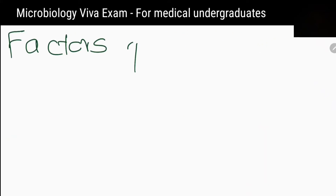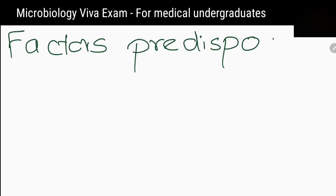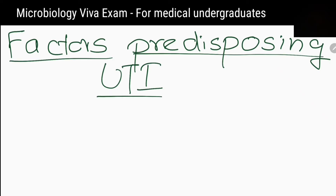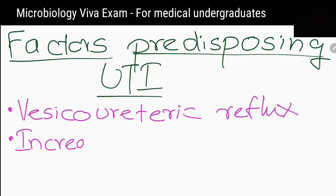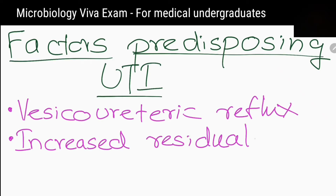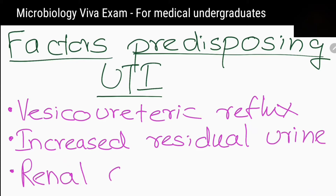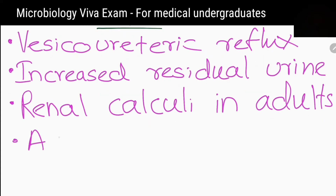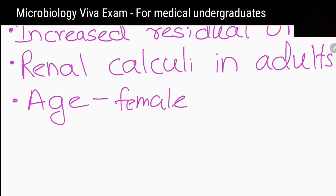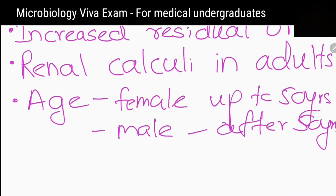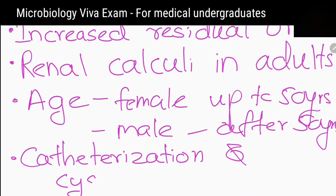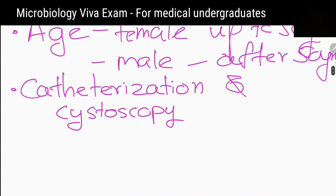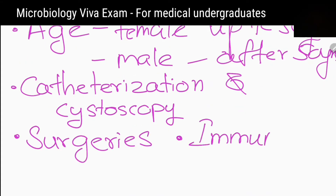What are the factors that predispose urinary tract infection? Vesicoureteric reflux, increased residual urine, renal calculi in adults, female gender, catheterization and cystoscopy, surgeries, diabetes mellitus, and immunosuppression.